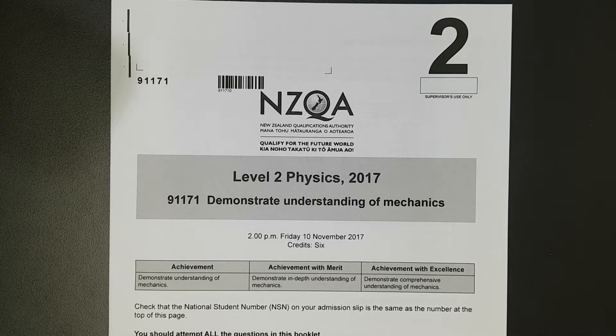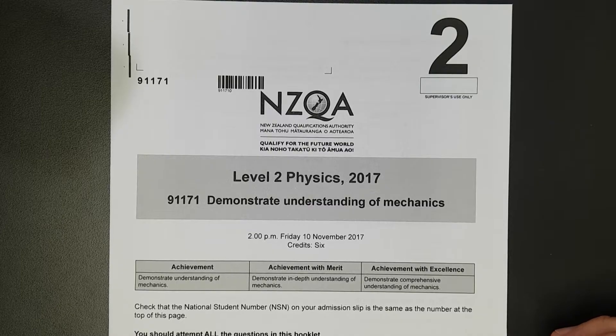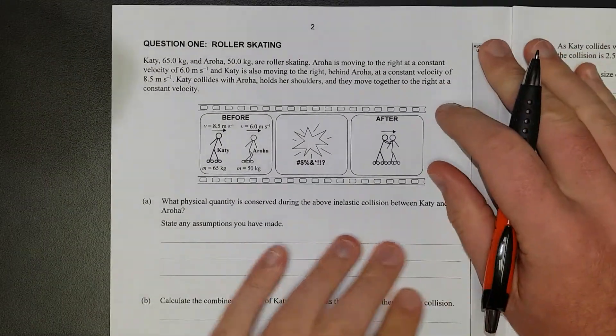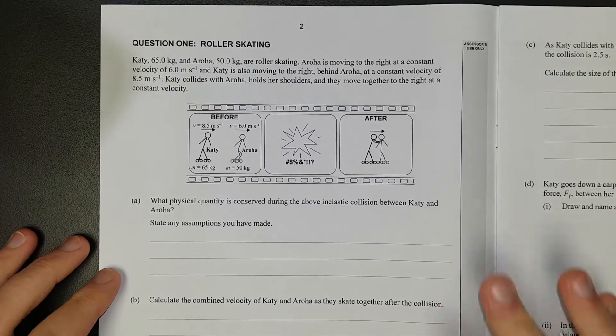For this video, I'll be working through question 1 of the level 2 2017 exam mechanics. Right, question 1. Katie, who weighs 65 kg, and Aroha, who weighs 50 kg roller skating.